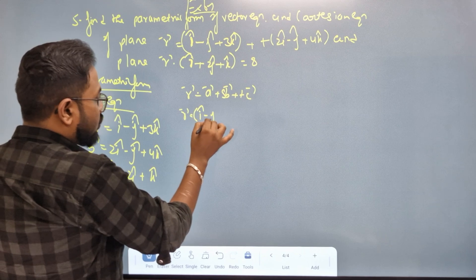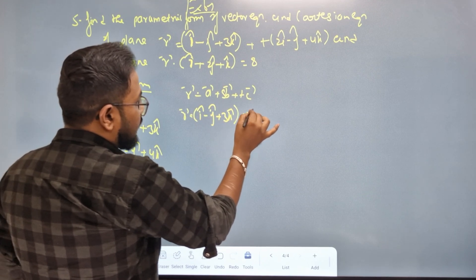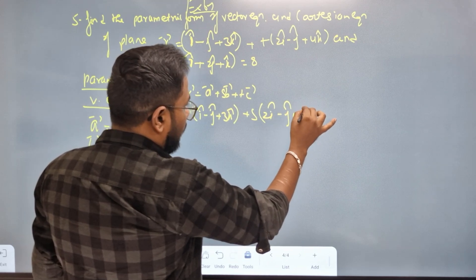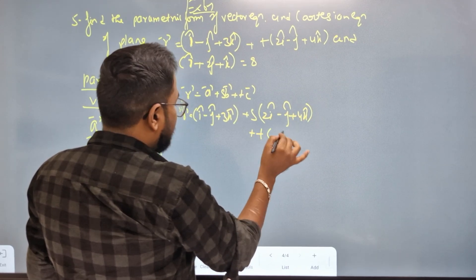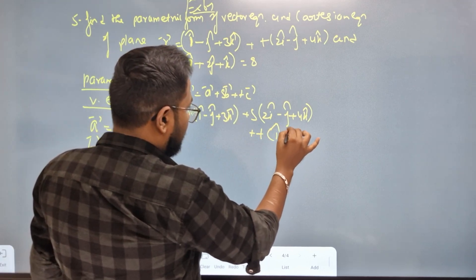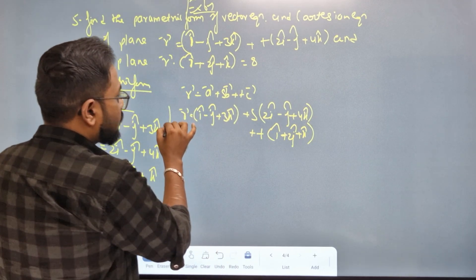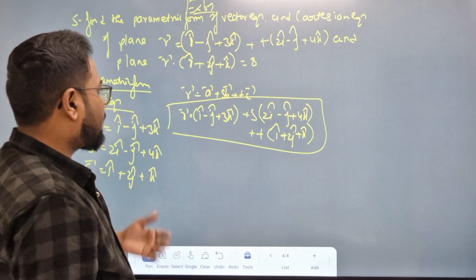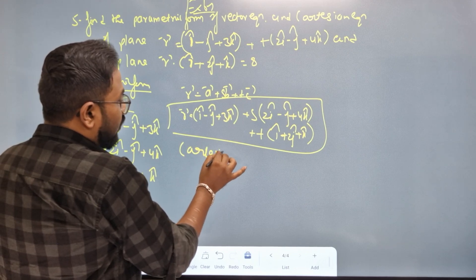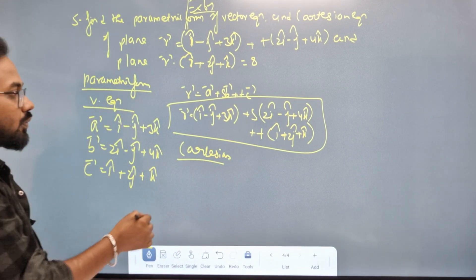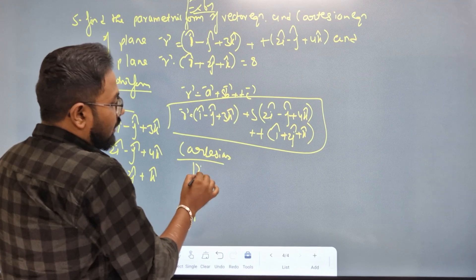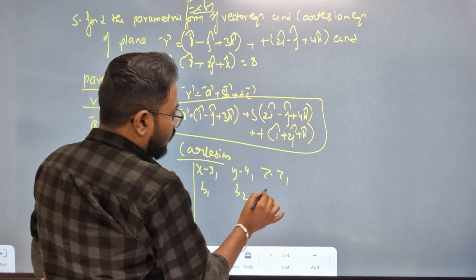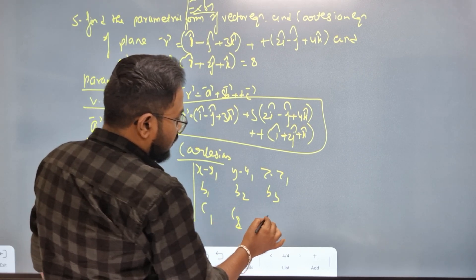Parametric form: r = a + s·b + t·c. Now for the Cartesian non-parametric form, the formula uses the determinant: (x − x1), (y − y1), (z − z1) in the first row; b1, b2, b3 in the second row; c1, c2, c3 in the third row, set equal to zero.